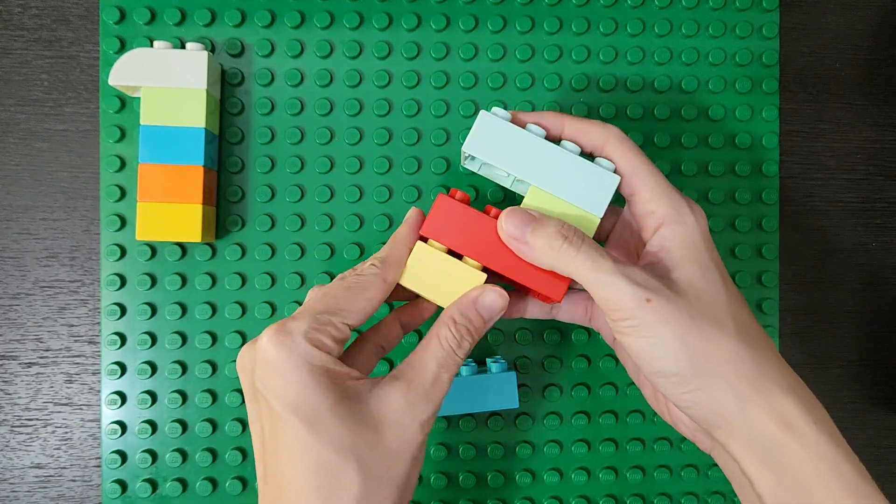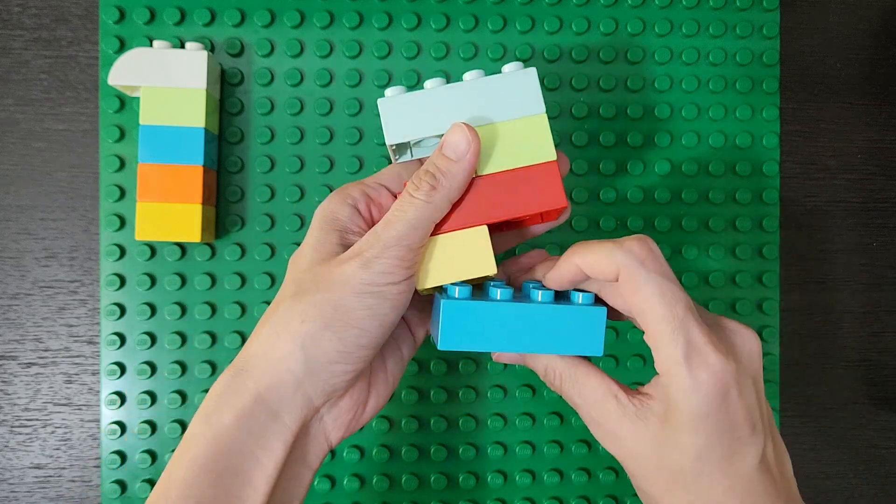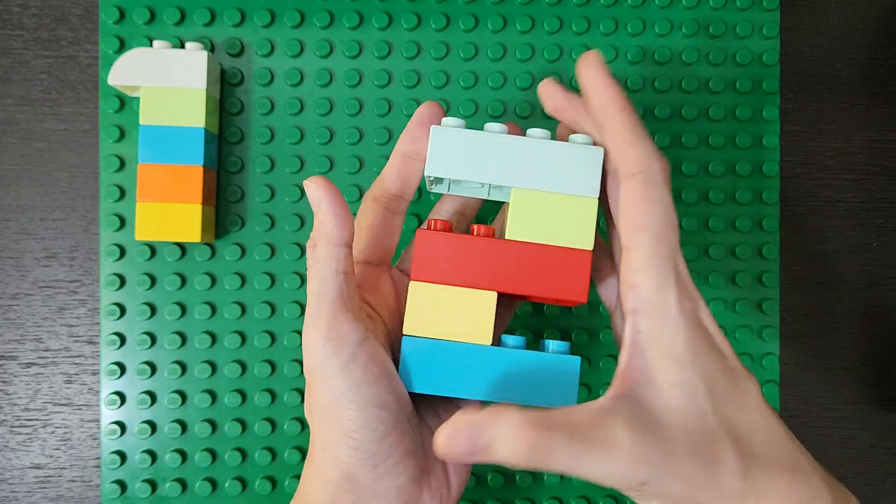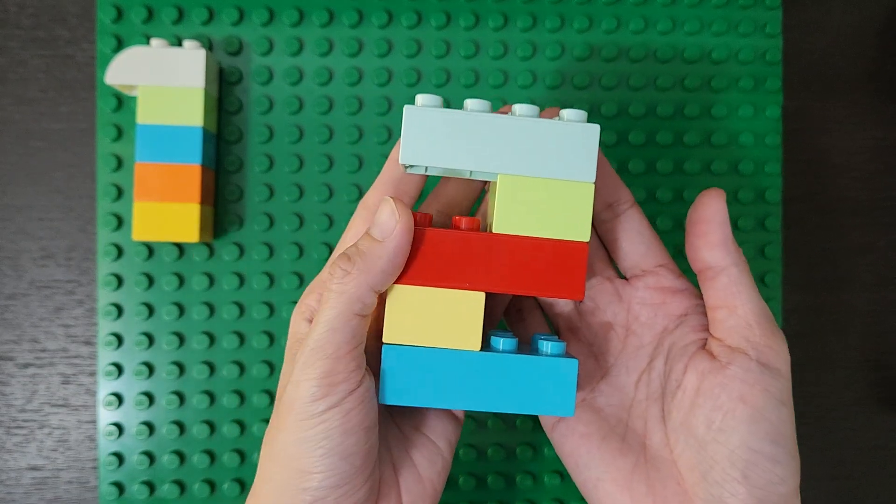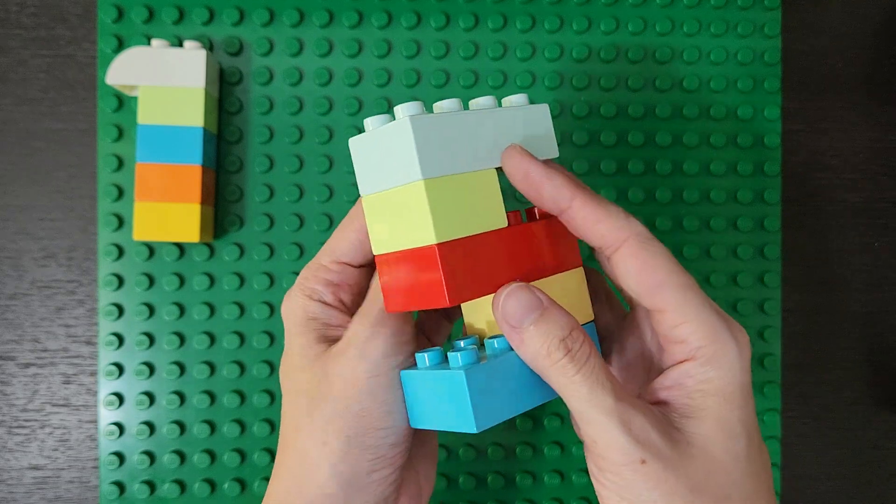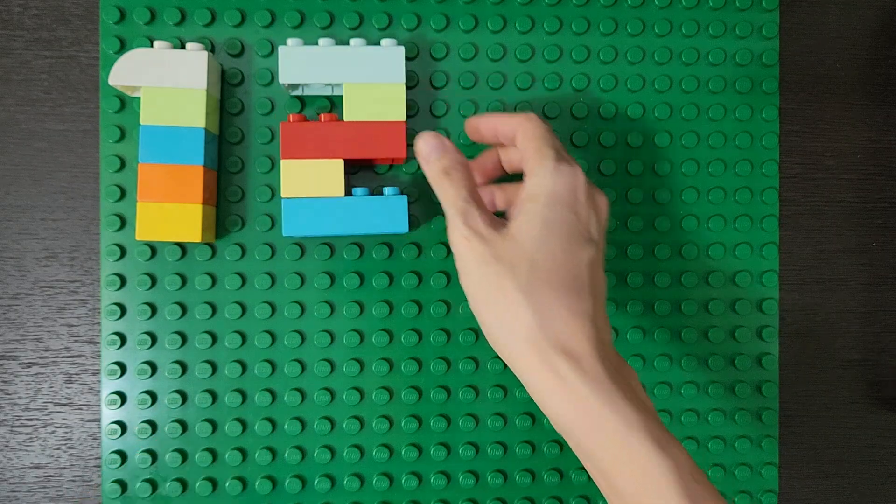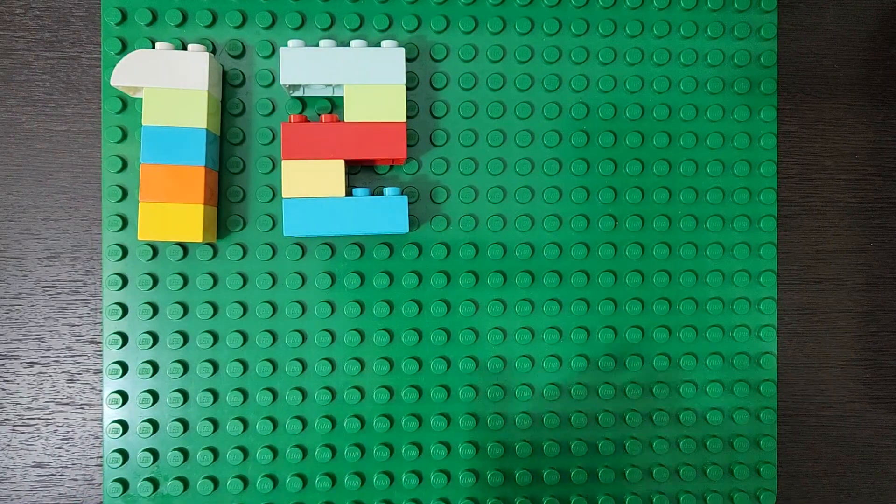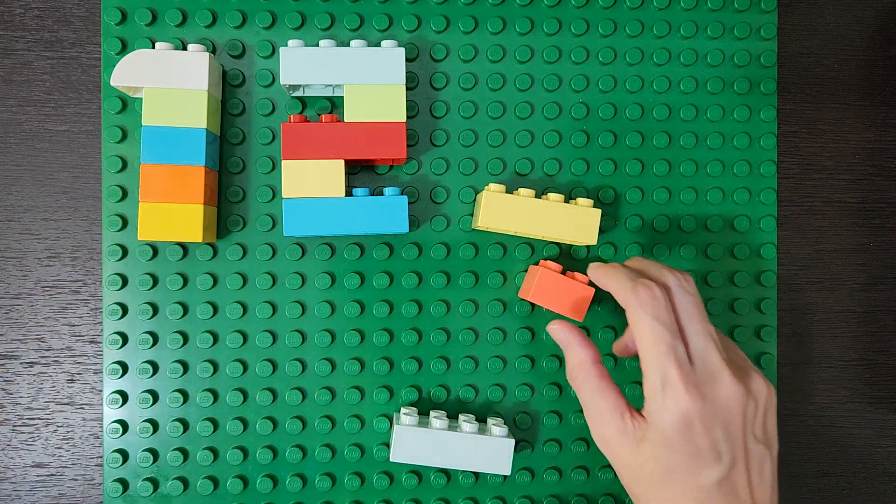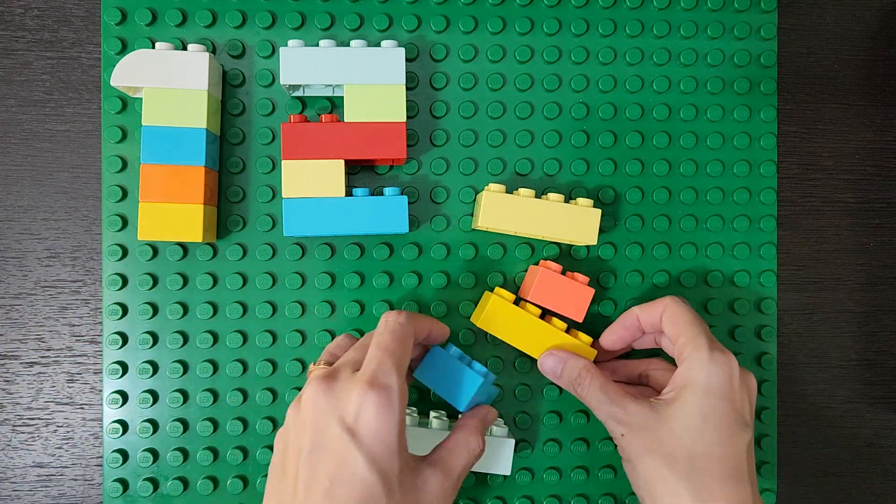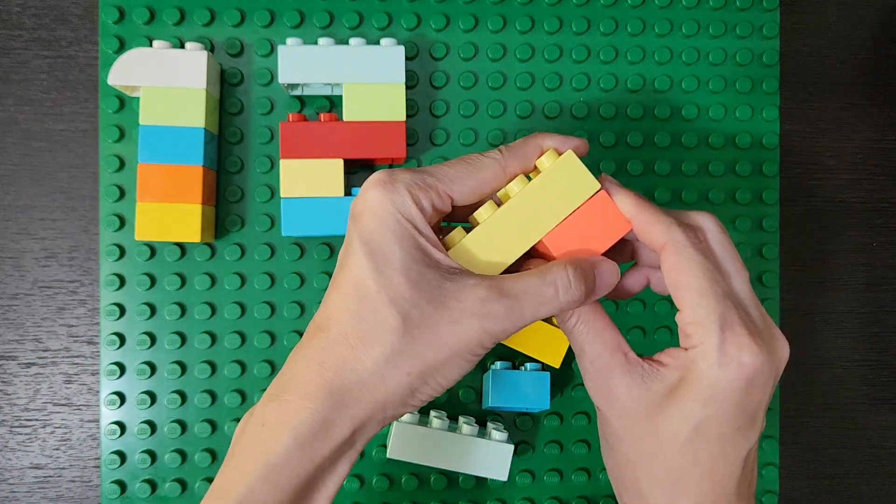One by one. Oopsie! What number is it? Two! Yes, it's two. What's next? Yes, we want to make three.